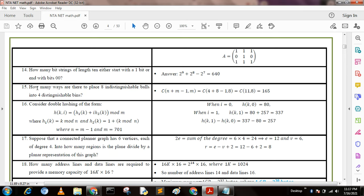Next question: How many ways are there to place 8 distinguishable balls into 4 distinguishable bins? We use the formula C(n+m-1, m) and put the value C(4+8-1, 8). Using this formula we calculate 165.